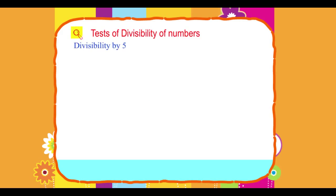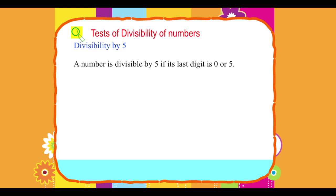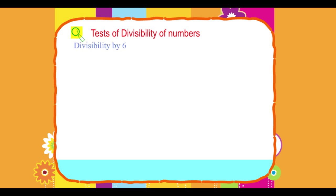Divisibility by 5: A number is divisible by 5 if its last digit is 0 or 5. Example: 2405, 1200, and 5015 are all divisible by 5.